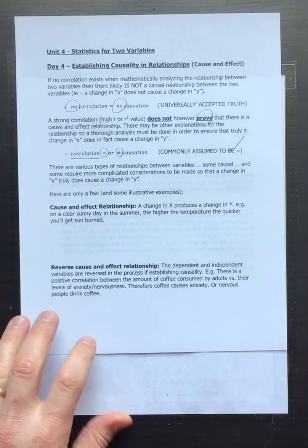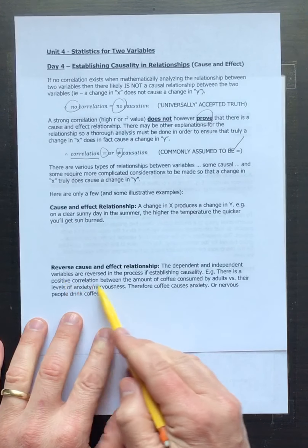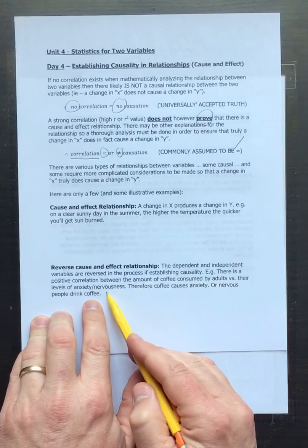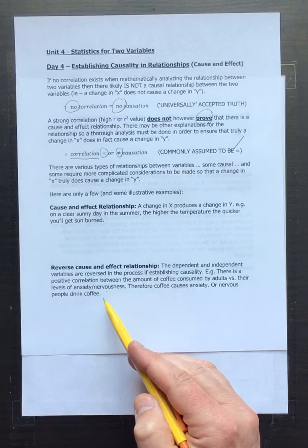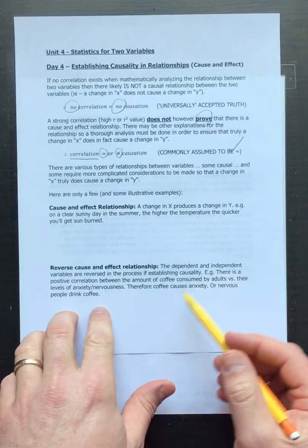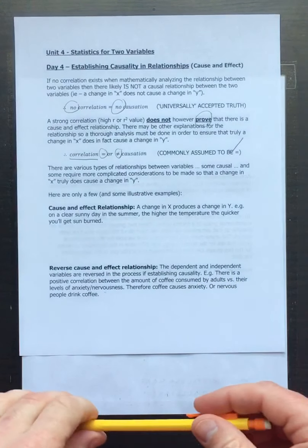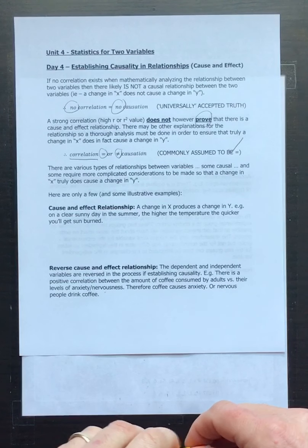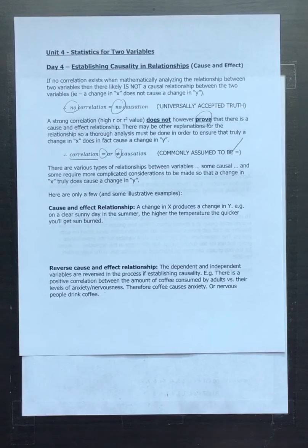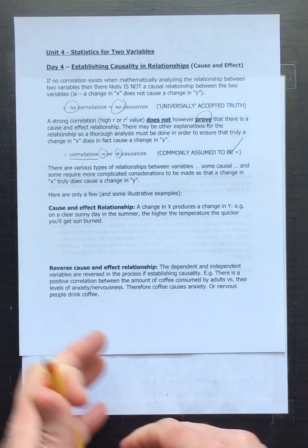The textbook example here is a positive correlation between the amount of coffee consumed by adults and their level of nervousness or anxiety. But it could also mean that the more anxious you are, the more likely you are to drink coffee to help calm you down — so who causes what?